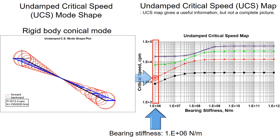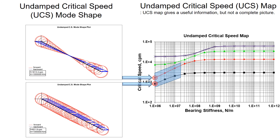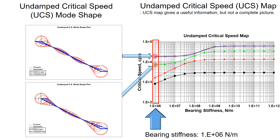The second critical speed mode shape is rigid body conical mode, also called rocking mode. As you can see in the figure, the motion at each end of the shaft is out of phase. For bearing support stiffness ranging from small values up to 10^7 Newton per meter, the first two modes are essentially straight lines increasing on the log-log scale, representing rigid body modes. Please note that this is an undamped critical speed map — if you have sufficient damping, the rigid modes can be well suppressed. The third and fourth critical speed mode shapes are called bending mode or free-free mode, and these modes are relatively unaffected by the range of bearing support stiffness.